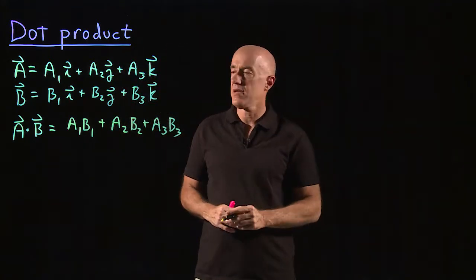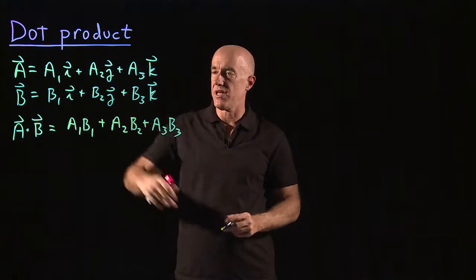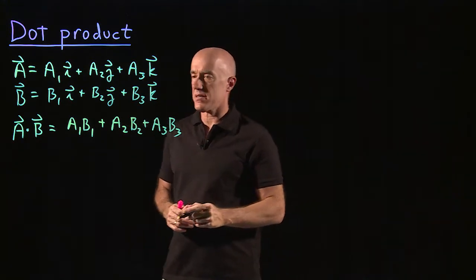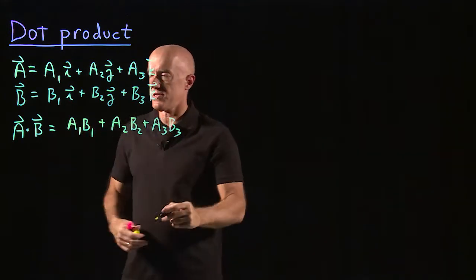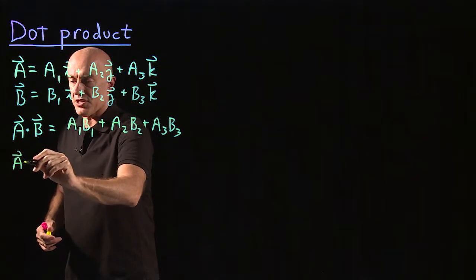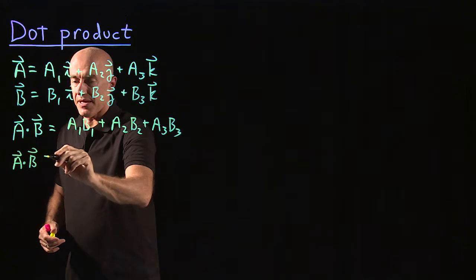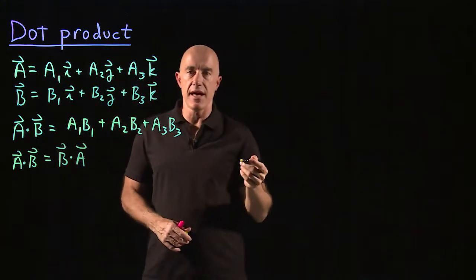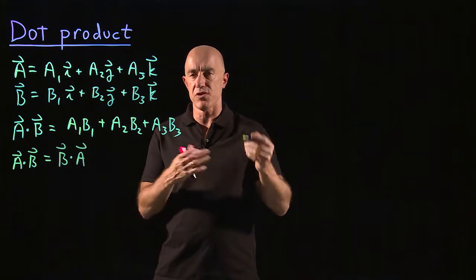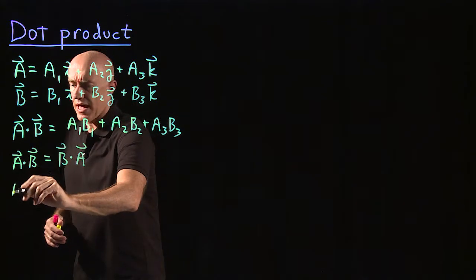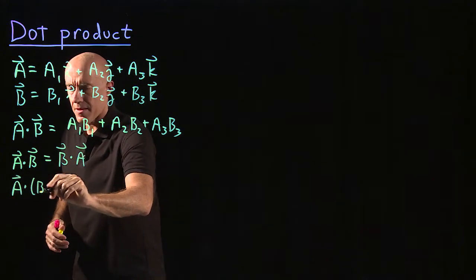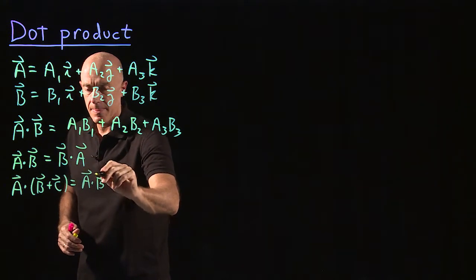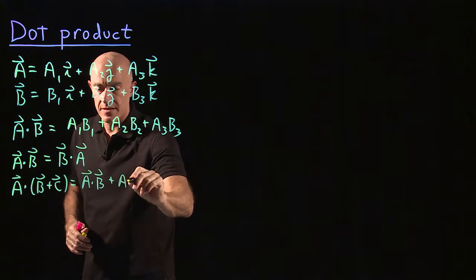That's a scalar — there are no vectors on the right-hand side. What is the algebra of this dot product? Multiplication commutes, so A dot B equals B dot A. And multiplication distributes over addition, so A dot (B plus C) equals A dot B plus A dot C.